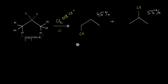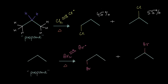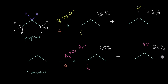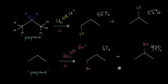As a challenge: if instead of chlorination we did bromination of propane, how much would be 1-bromopropane versus 2-bromopropane? One might expect 45% and 55% like chlorination, but in reality the 2-bromoproduct is a whopping 97% while 1-bromopropane is only 3%. Bromination of propane is even more selective towards the second-degree product — we'll explore why in the next video.